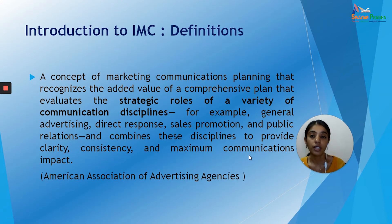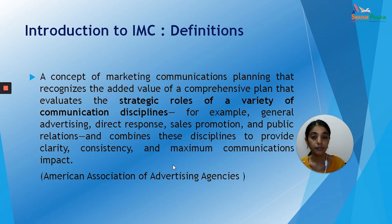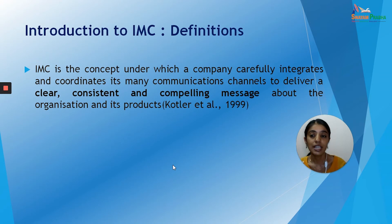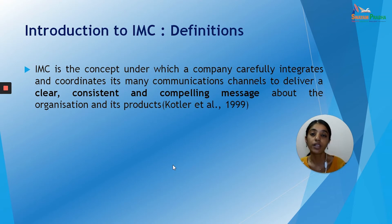So according to this definition, there are three key things to remember. One, it's a comprehensive plan. Two, it evaluates the strategic role of different communication disciplines. And three, it combines these disciplines to give you clarity, consistency, and maximum communication impact. Mr. Kotler, a famous marketing practitioner, says that IMC is a concept under which a company carefully integrates and coordinates its many communication channels to bring about a clear, consistent, compelling message. We have to understand that it is only when our message is clear in thought and expression that it is going to compel your audience to act upon it.